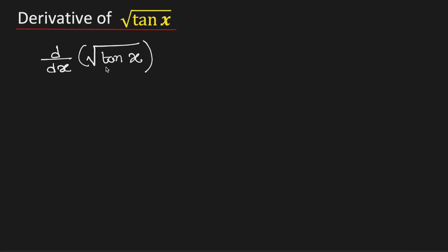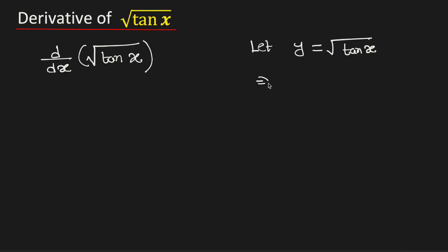In this video we will find the derivative of square root of tan x. To do this, let us put y is equal to square root of tan x, so we need to find dy/dx. From here we have y squared is equal to tan x.